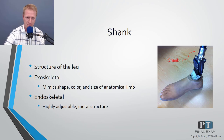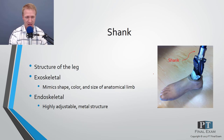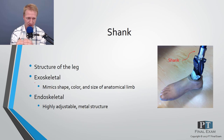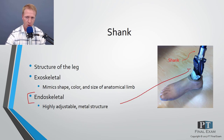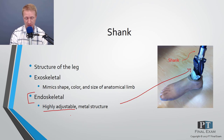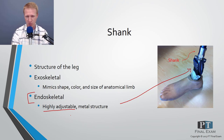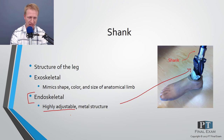The shank is an adjustable metal component replacing the lower leg. There are two types: exoskeletal, which looks like an anatomical limb, and endoskeletal, which is by far the most common. The endoskeletal shank is highly adjustable, allowing the clinician to modify fit, identify problems, and refine the prosthesis to optimize the patient's ambulation.